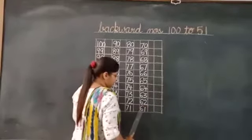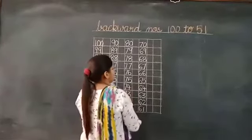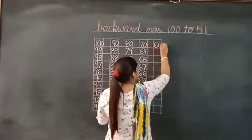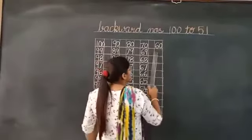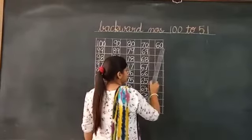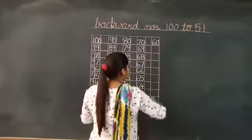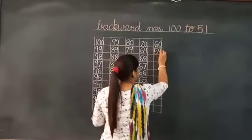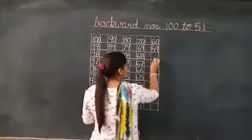And 61. Which number will come before 61? Answer is 60. Now, which number will come before 60? Who gives the answer? That is 59.